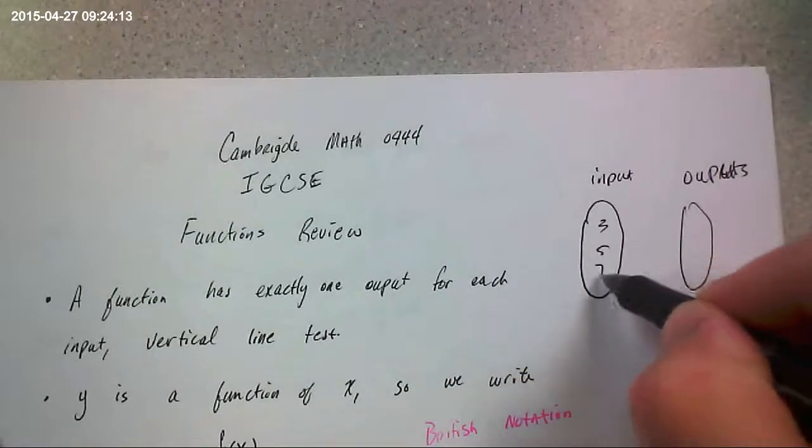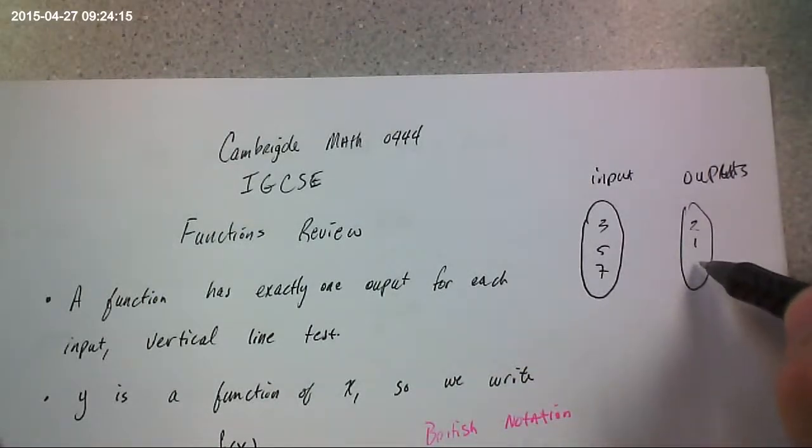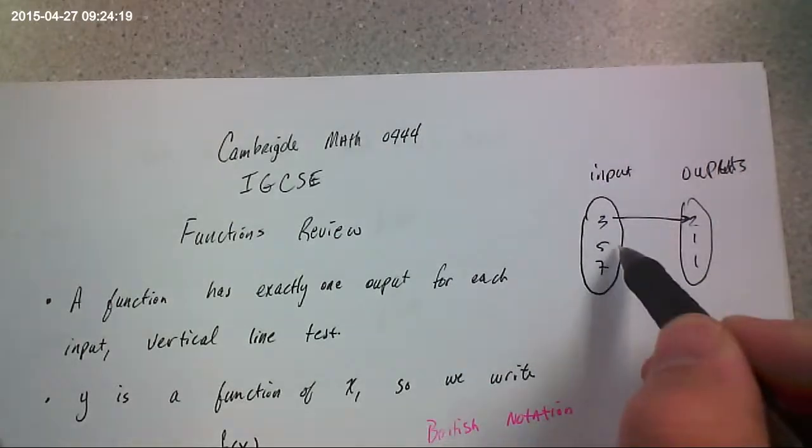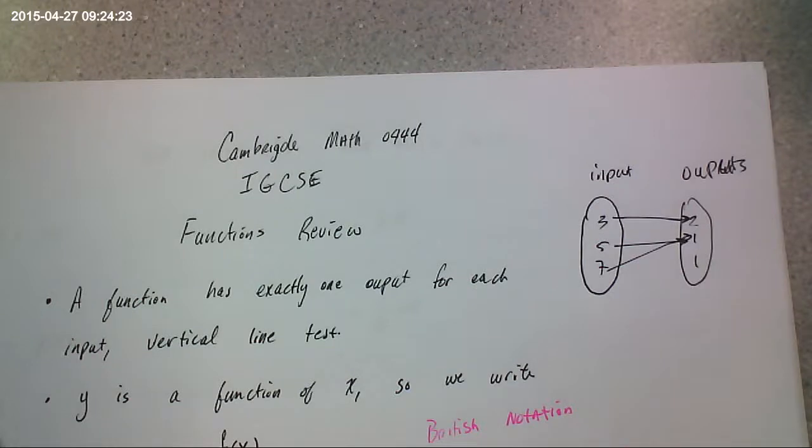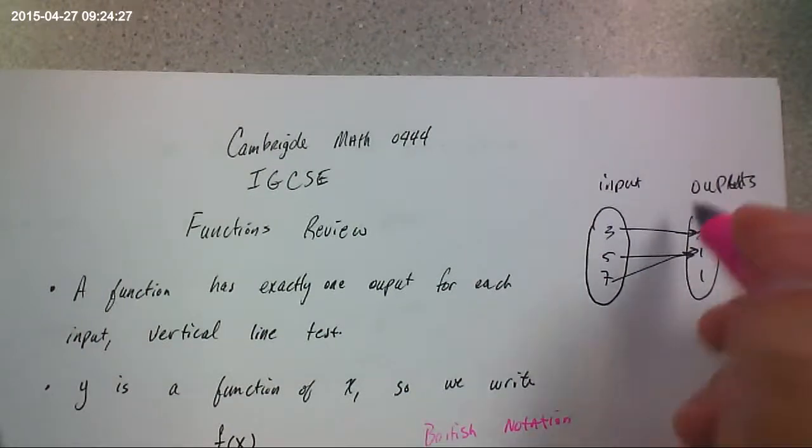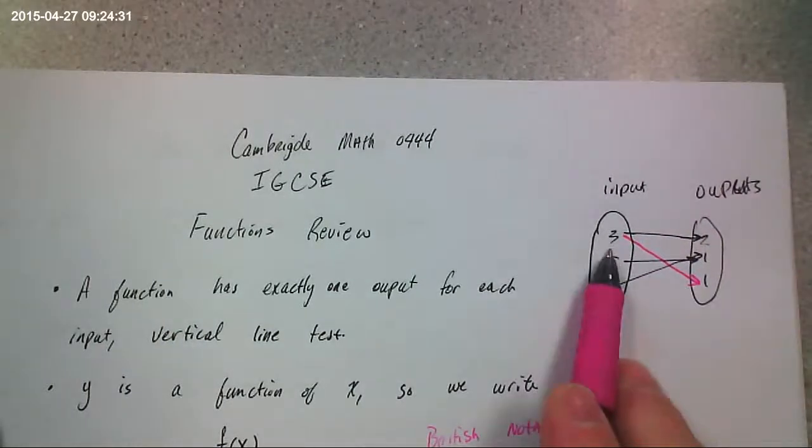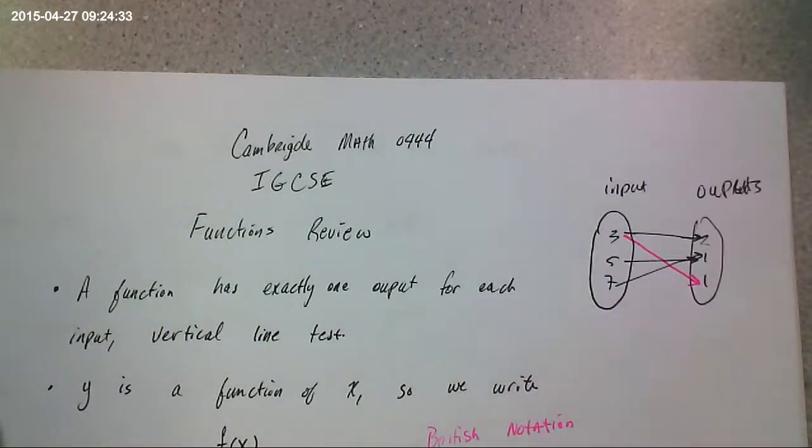Like 3, 5, 7, 2, 1, 1. So 3 could go here, and both 5 and 7 could go to 1. It doesn't really matter. That's a function. But what can't happen is you can't have 3 go to two different numbers. This input cannot have two different outputs. That would not be a function.